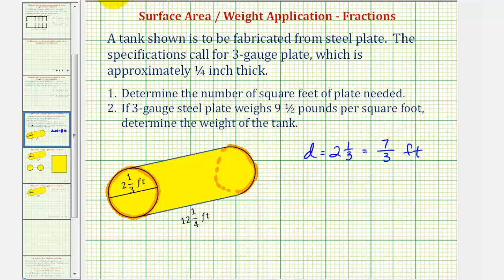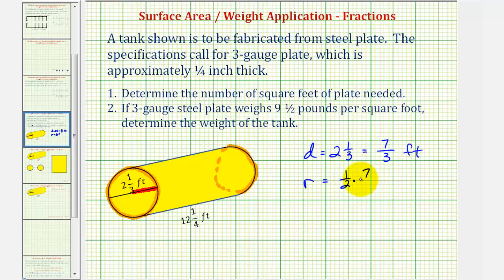We also need to find the radius, which is the length of the segment from the center of the circle to the edge of the circle — half of the diameter. So we can say R equals one-half times the diameter of seven-thirds. Nothing simplifies here, so we multiply the numerators and denominators to get seven-sixths feet.